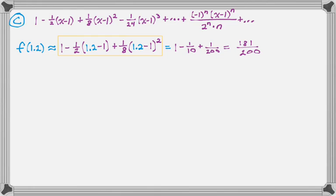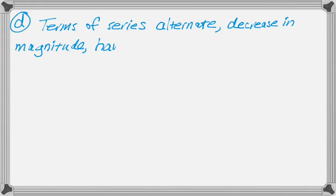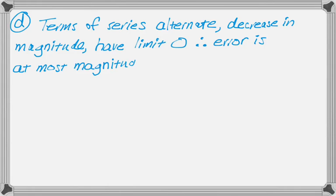Part D shows that our approximation from part C is within 0.001 of the exact value. That sounds like alternating series error. So the terms of the series alternate, they decrease in magnitude, which is important, and they have a limit of 0. So if those three things are true, then the error in using any number of terms is at most the first term that you left off. So it's at most the magnitude of the first term left off.